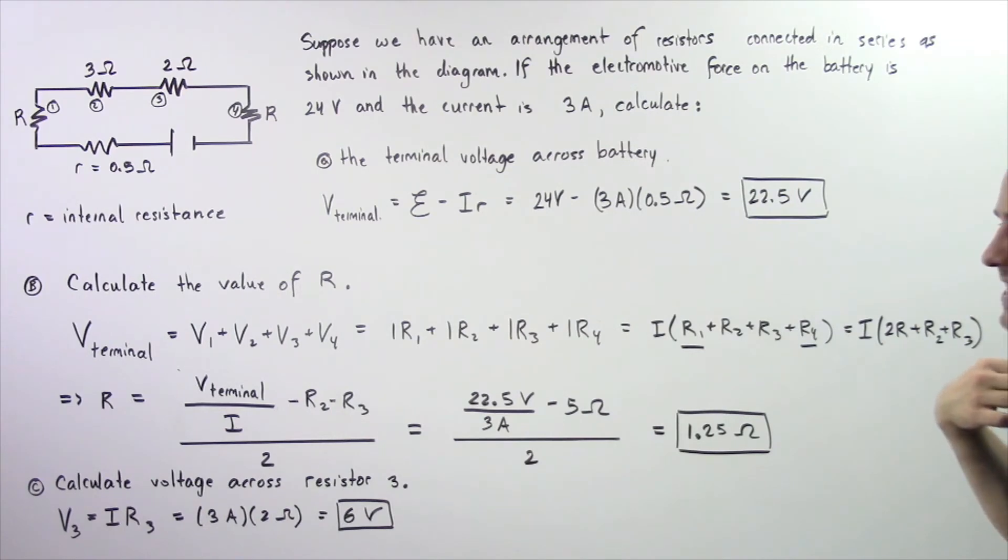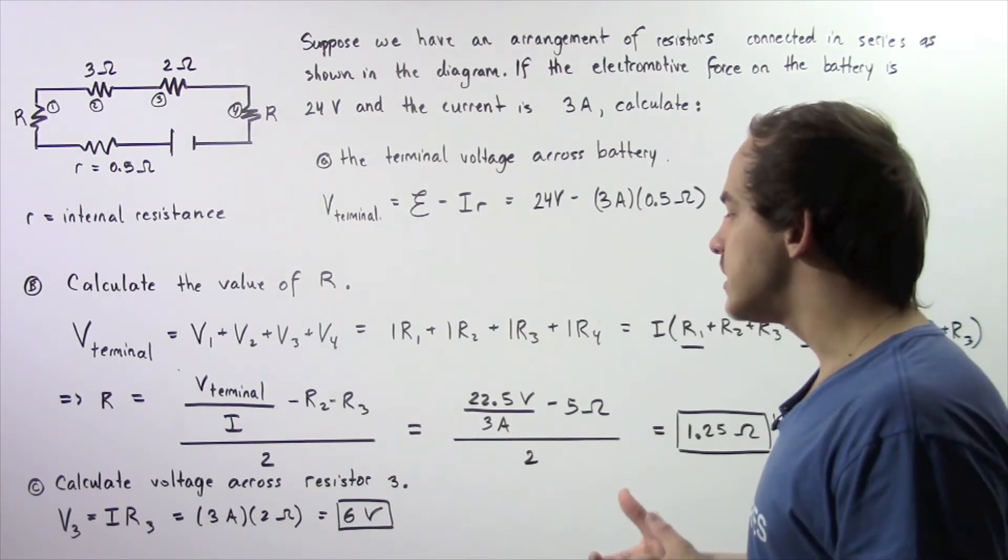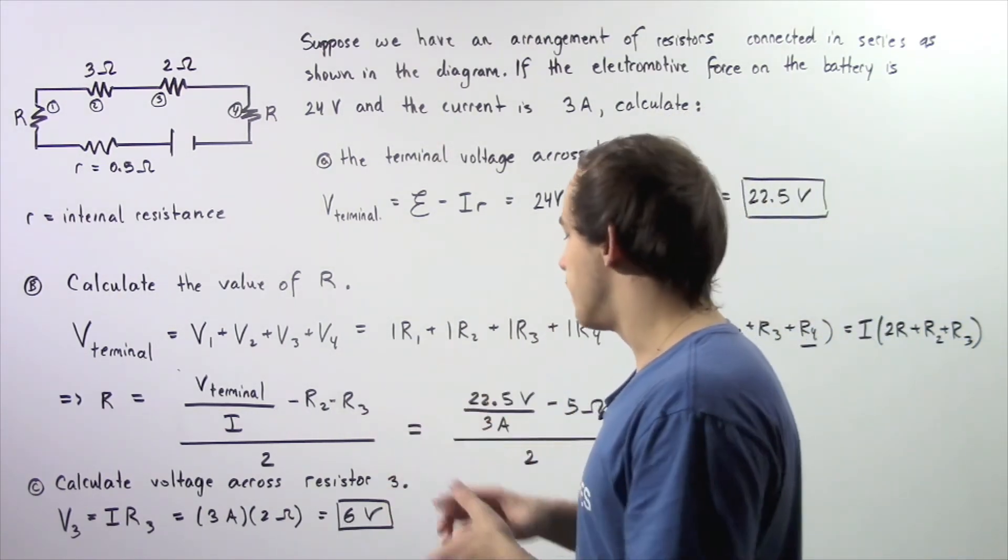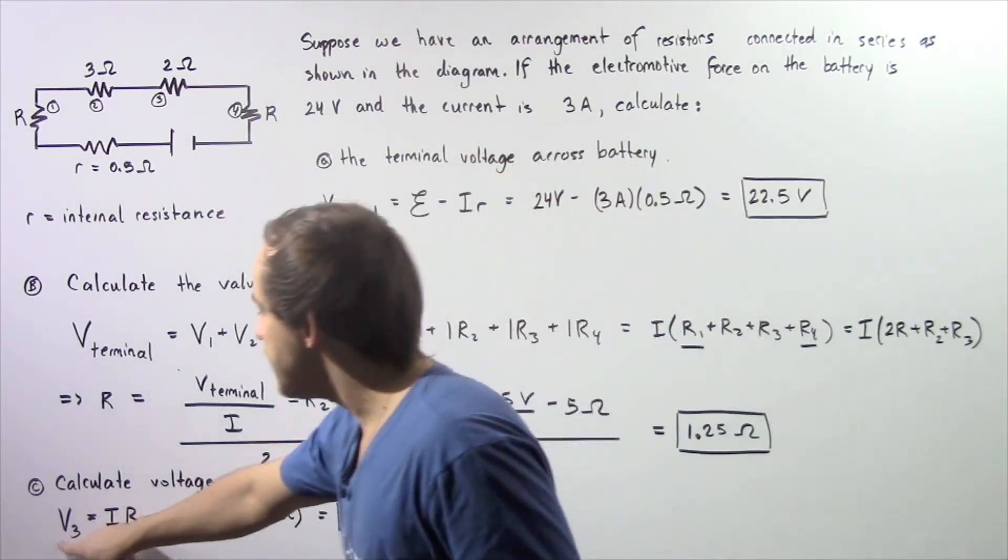And finally, let's move on to part C. Calculate the voltage across resistor number 3. So to calculate V3, we simply take the product of the electric current and the resistance found on our resistor number 3.